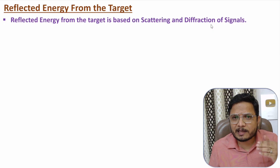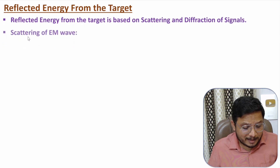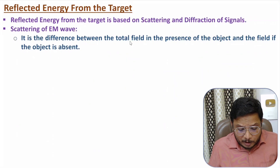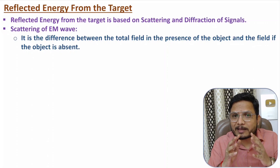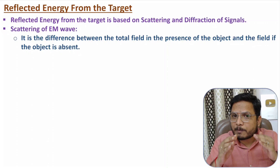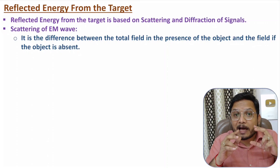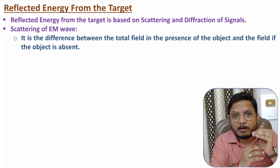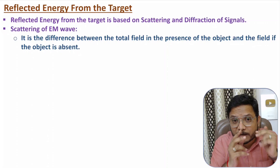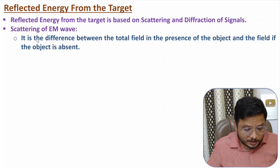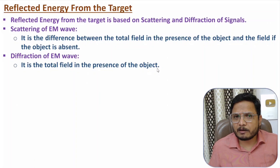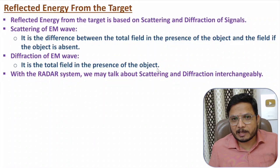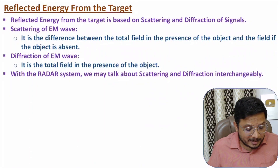In radar engineering, we usually use these two words interchangeably. Scattering is the difference between the total field in the presence of an object and the field if the object is absent. Diffraction is the amount of total field in the presence of the object. Usually in radar engineering, we use scattering and diffraction interchangeably, but one should know the basic difference between them.